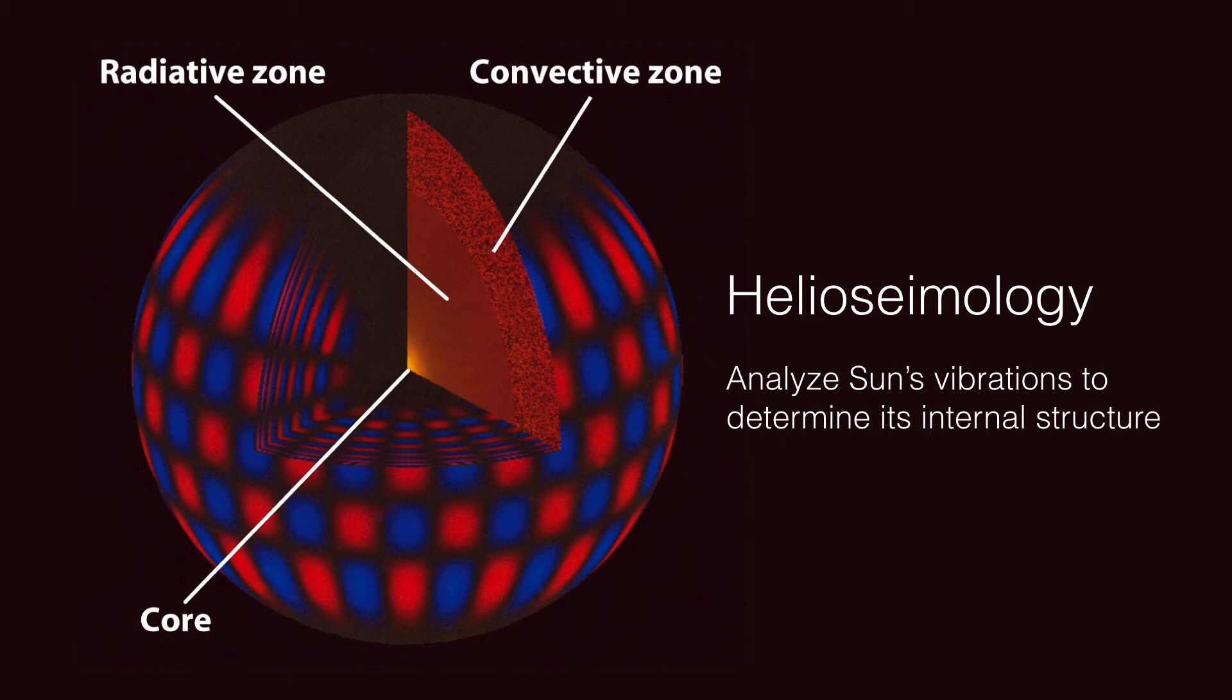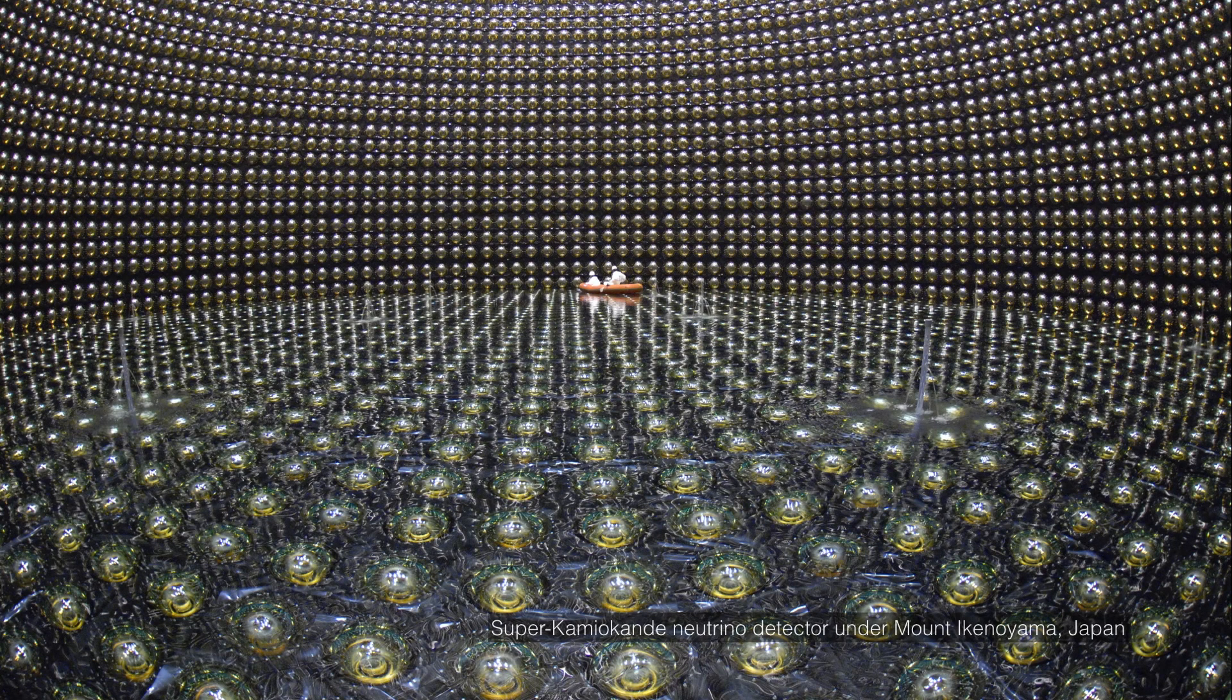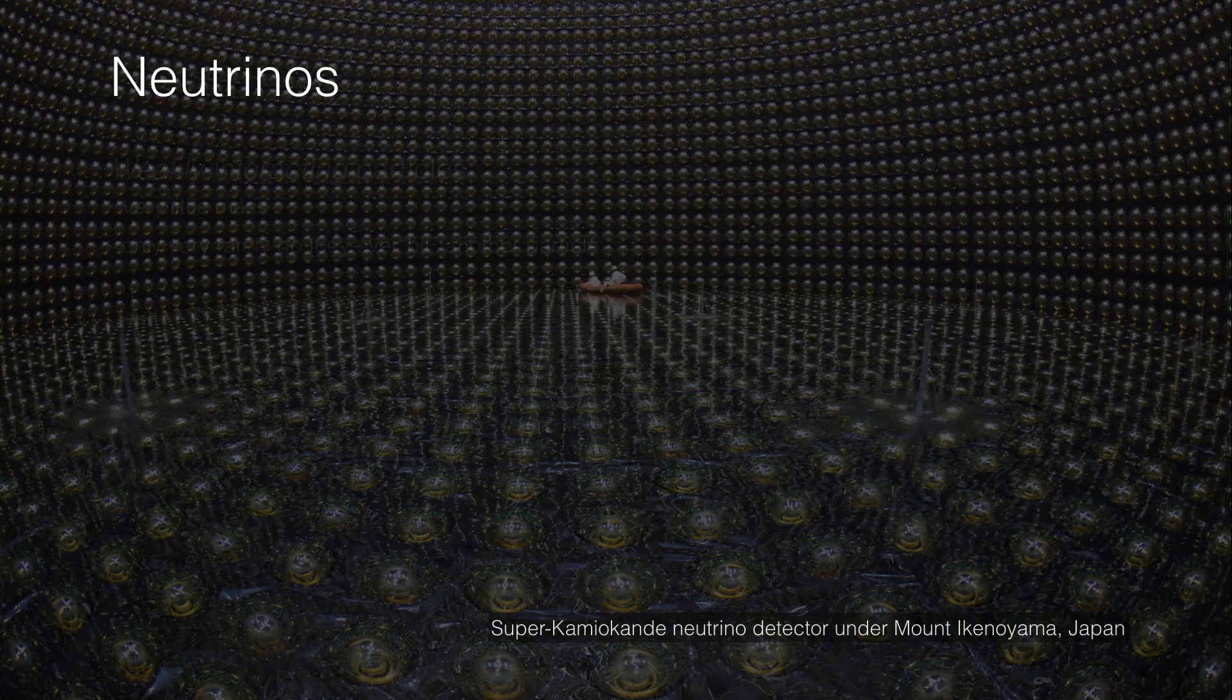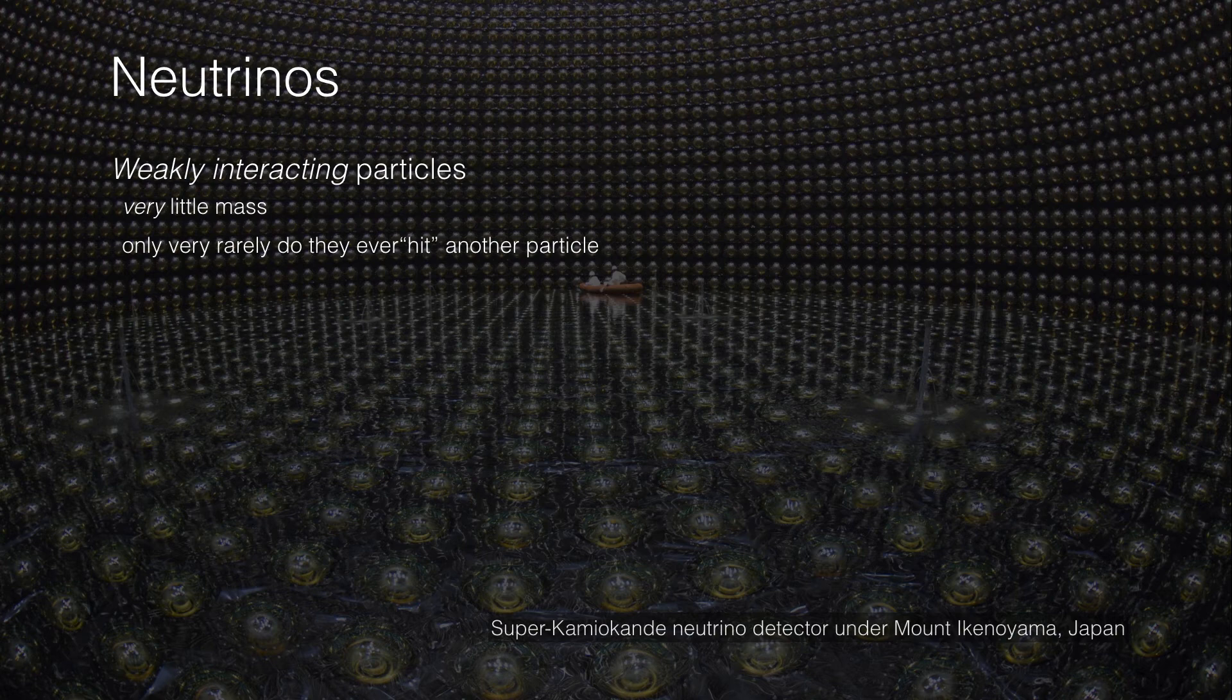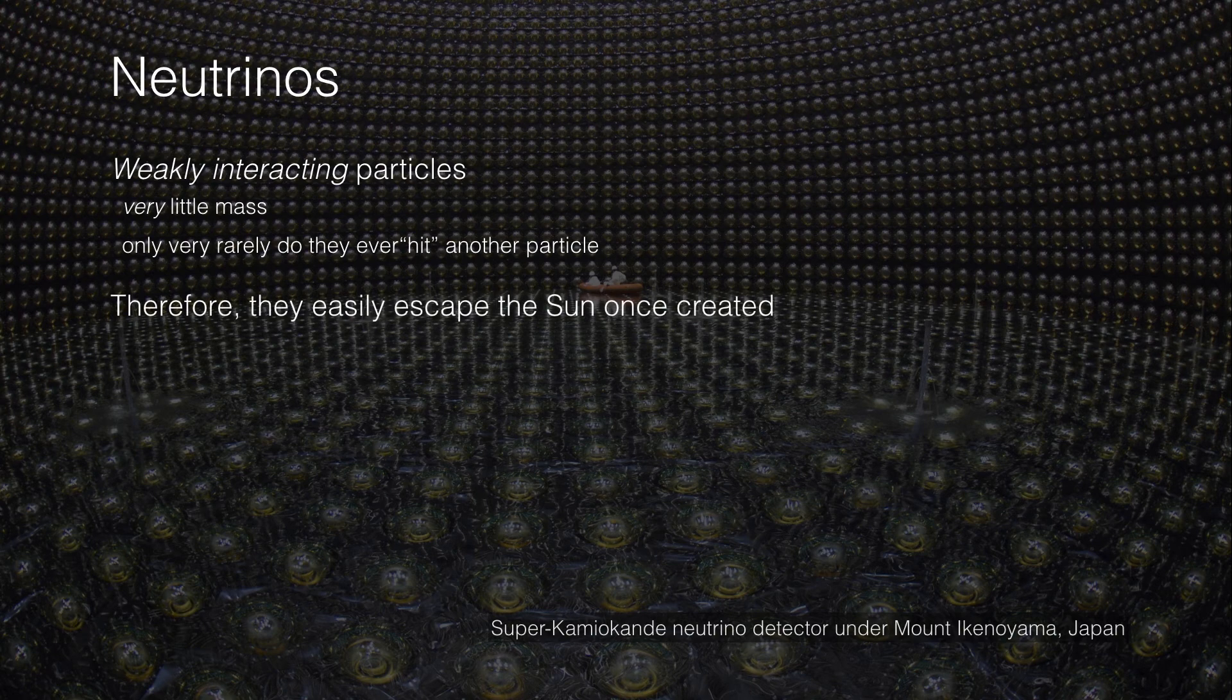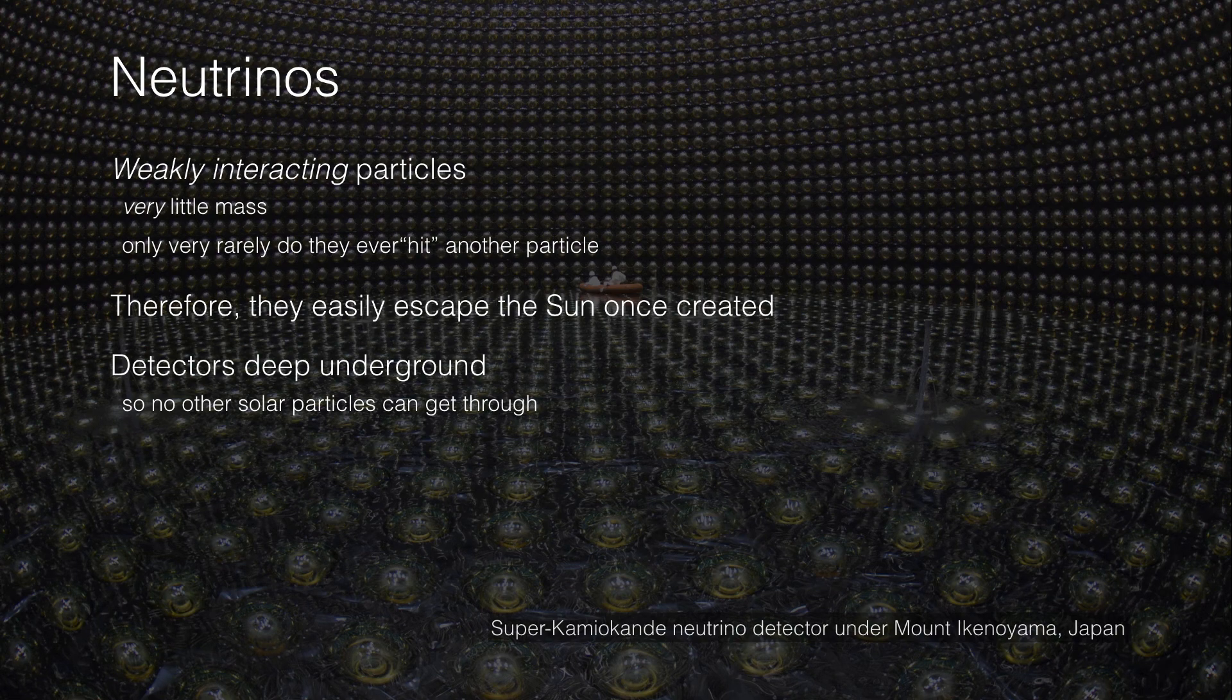How do we know the sun is producing energy in its core via the proton-proton chain? We can detect neutrinos, but we have to construct very elaborate experiments to detect them. Remember, neutrinos are very weakly interacting particles. It's not that they don't have any mass - they have very little mass and only very rarely will they ever hit some other particle. They escape the sun once created. In order for us to detect them, we have to build our detectors deep underground.